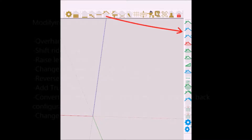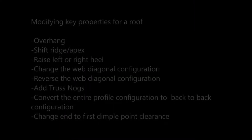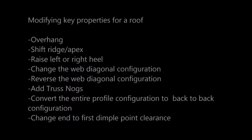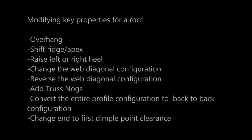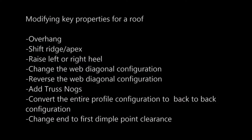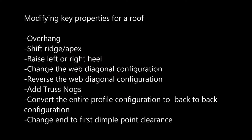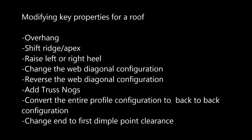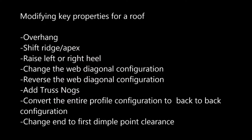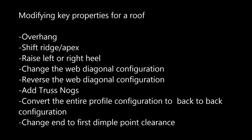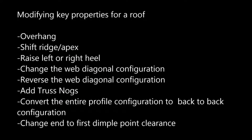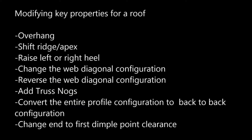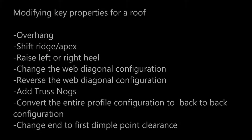In this section I will be modifying the following key properties: overhang, shift ridge, apex, raise left or right heel, change the web diagonal configuration, reverse the web diagonal configuration, add truss nogs, convert the entire profile configuration to back-to-back configuration, and change into first dimple point clearance.